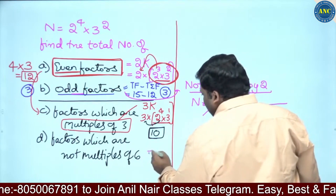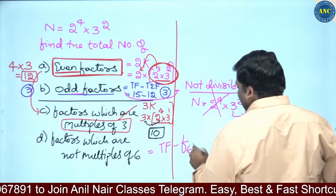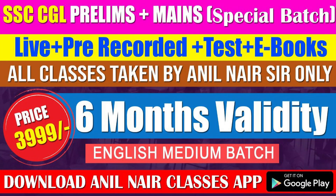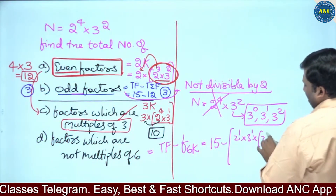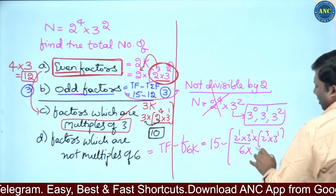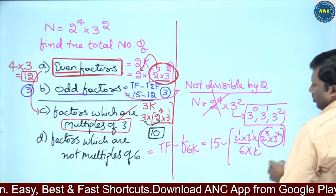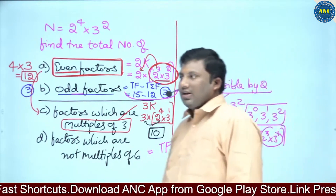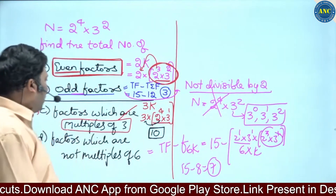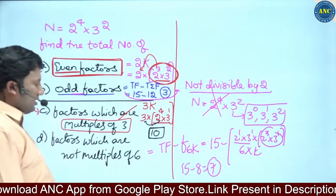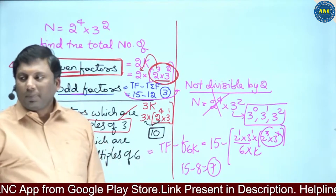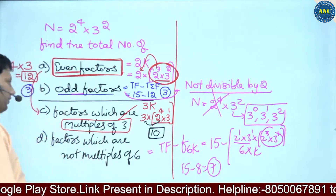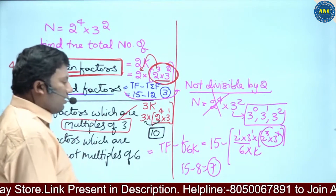Similarly, factors which are NOT multiples of 6 equals total factors minus factors which are multiples of 6. A multiple of 6 is written as 2 into 3 into something, so the remaining part is 2 cube into 3 power 1. That gives 4 into 2 equals 8 factors which are multiples of 6. Therefore, 15 minus 8 equals 7 factors which are not multiples of 6.